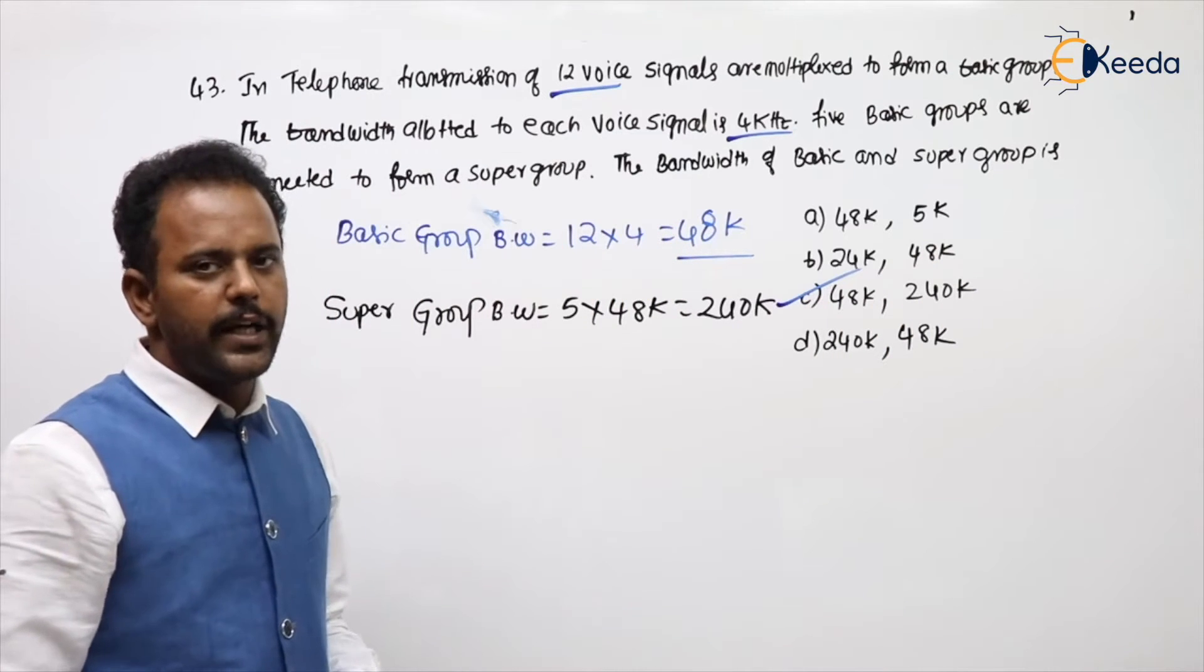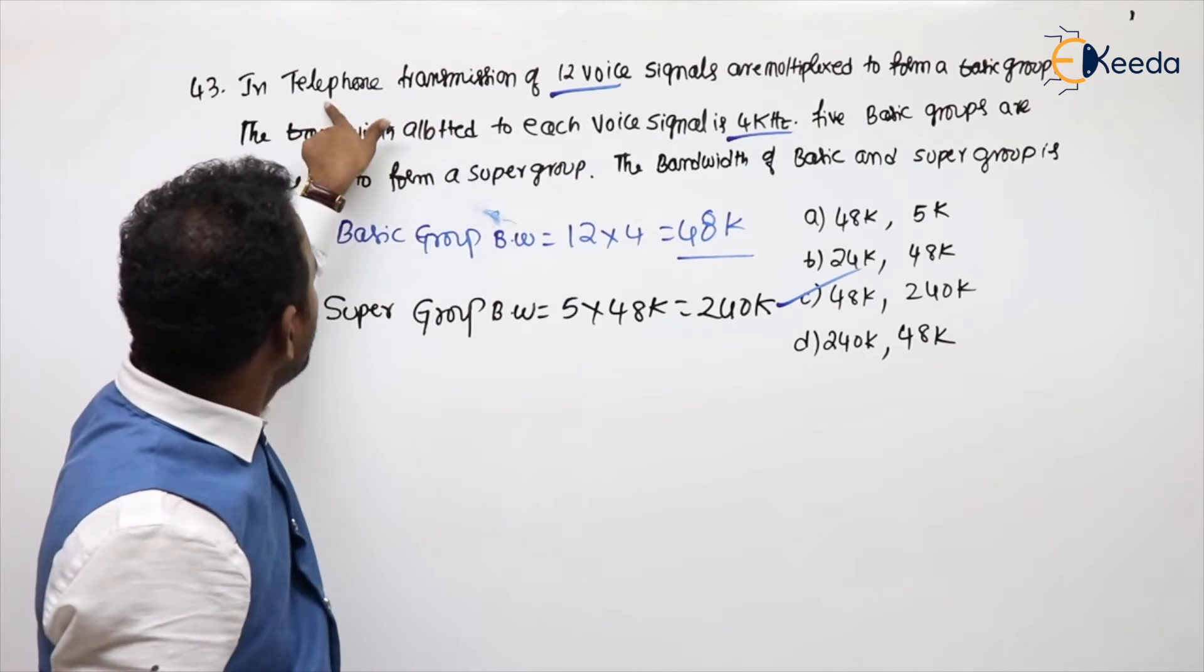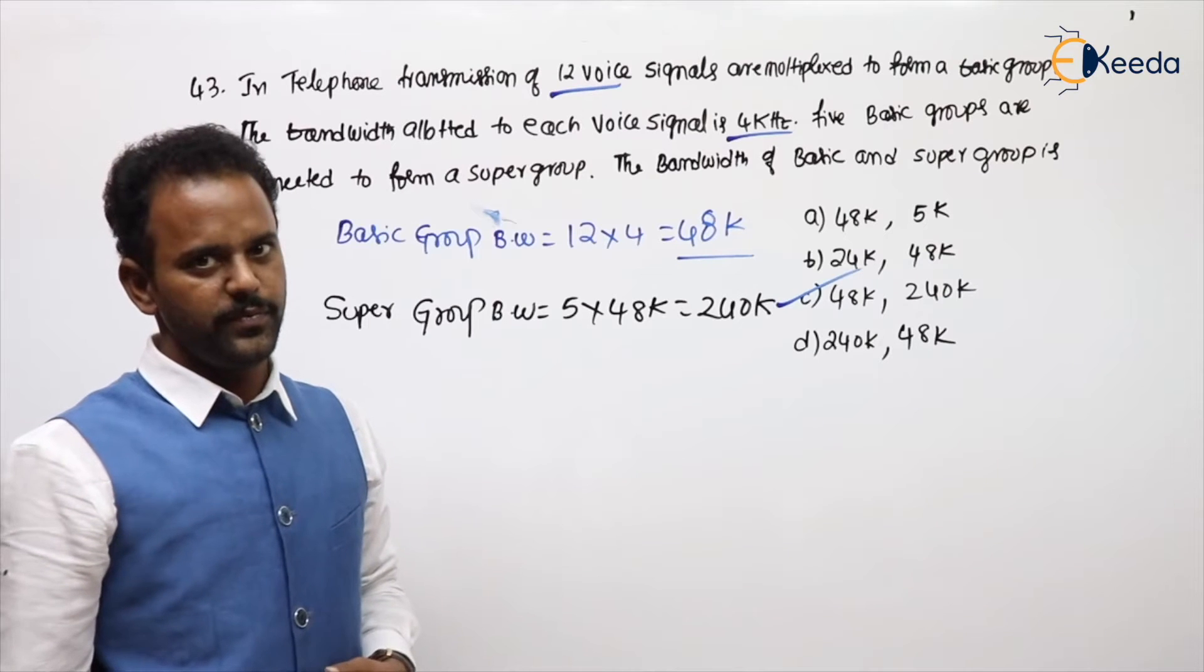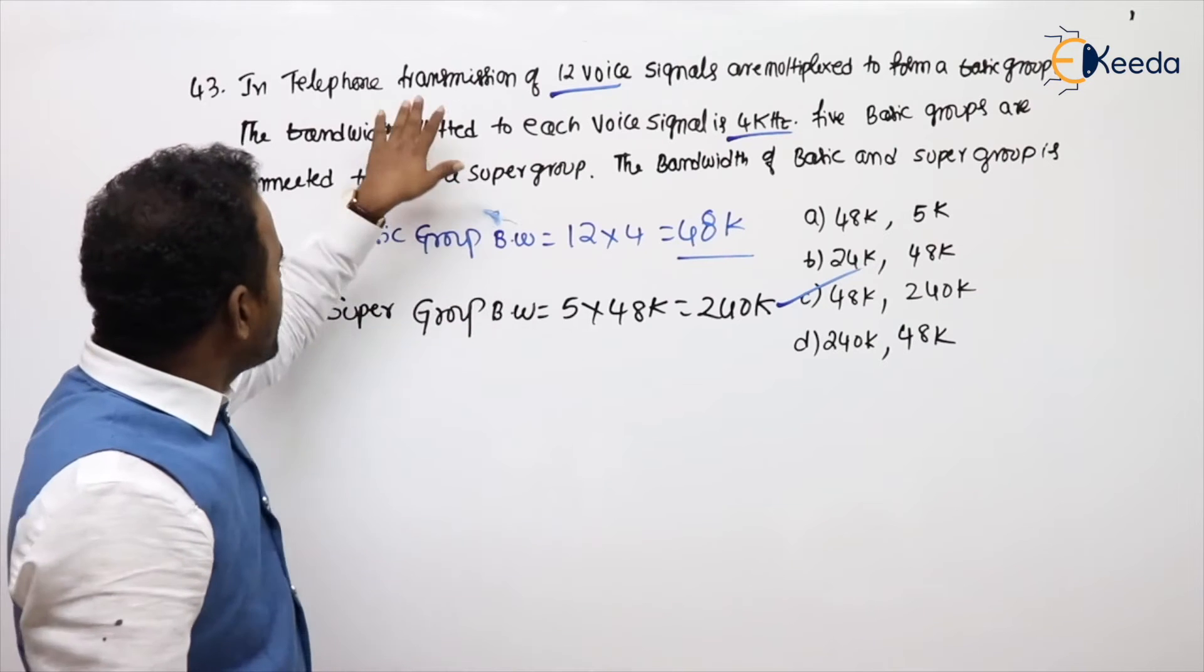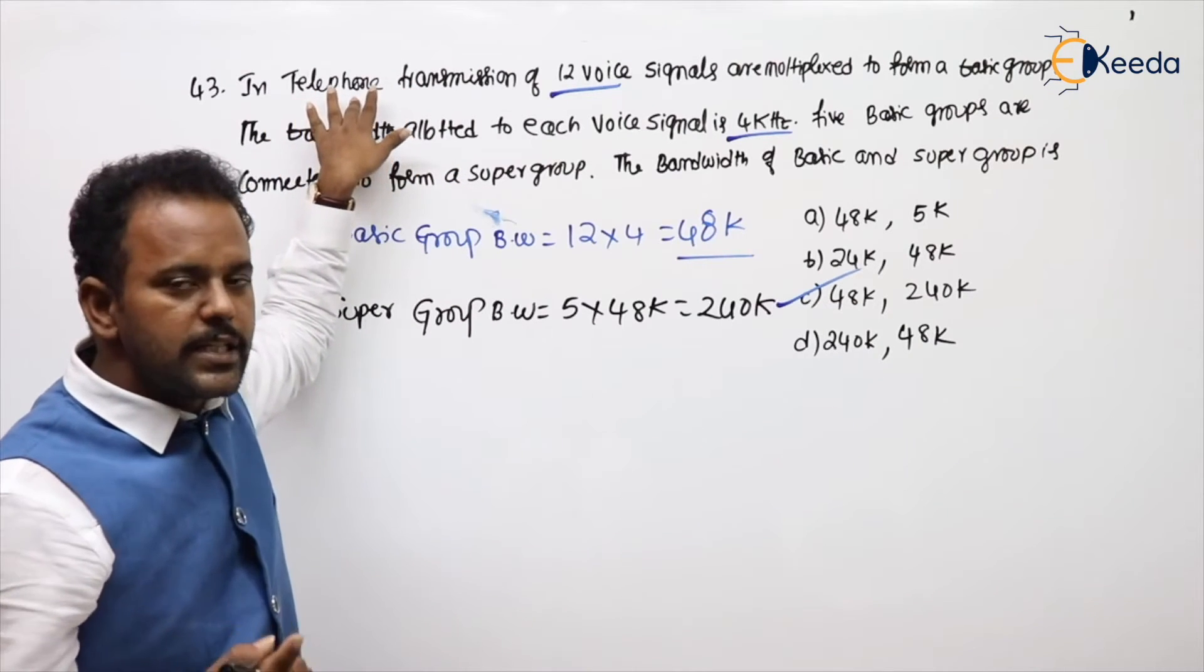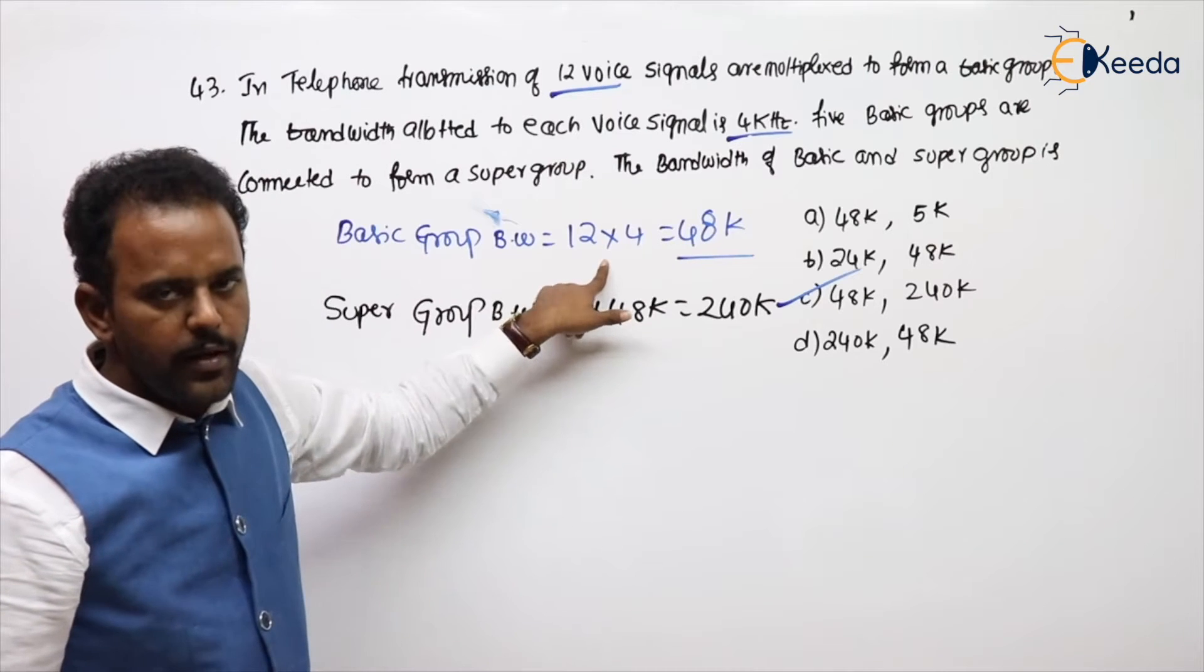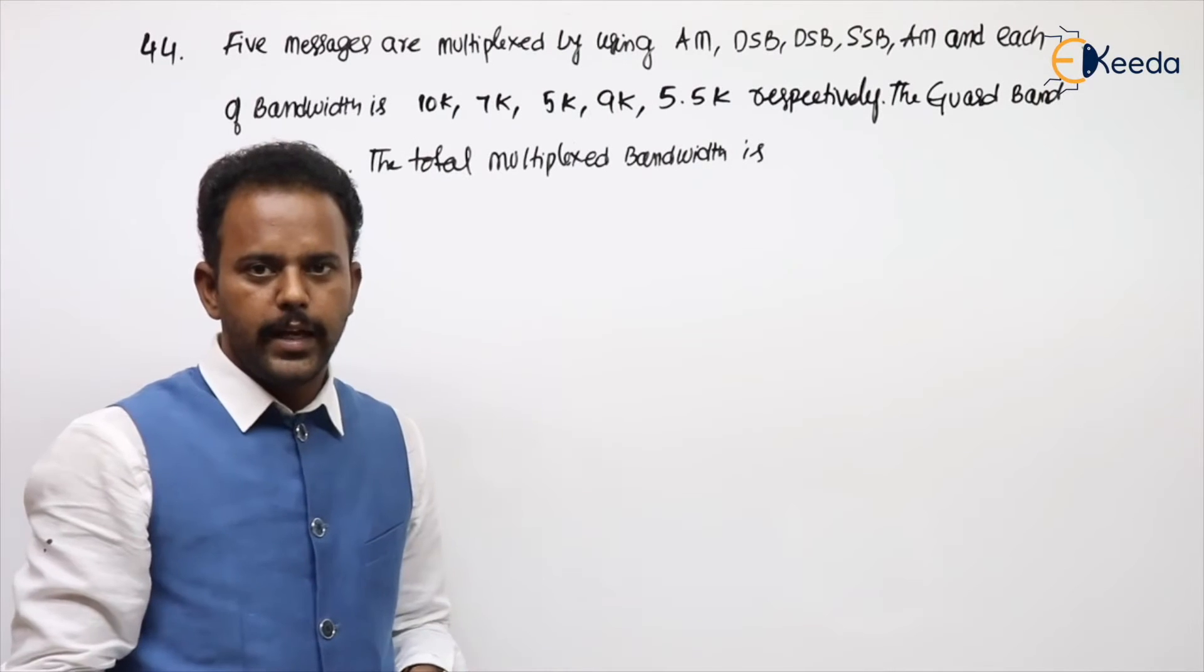Here, bandwidth is not mentioned, you can take directly. And here, telephone transmission means you need to take it as SSBSC, not mentioned also. If suppose AM, it will be coming as double because 2FM. But here, not mentioned, telephone means telephone voice. So each signal is FM, that is 4K, so 12 signals are there, 12 times 4 is 48. And the supergroup, 5 into 48. Clear?